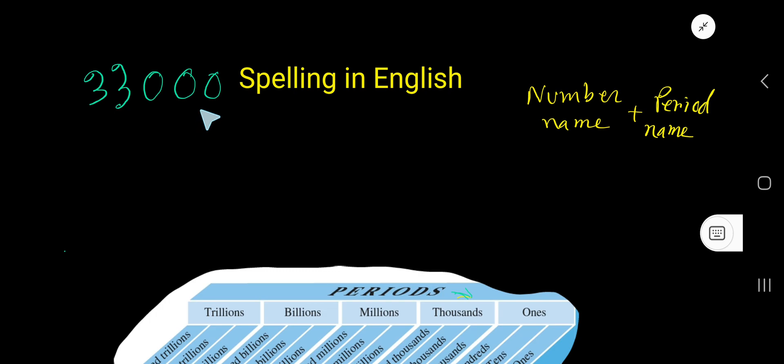33,000 spelling in English. To spell this number, you have to follow this rule: number name plus period name. You have to make a group taking three digits at a time. This three-digit group is called a period.